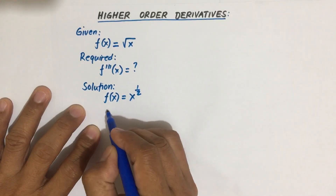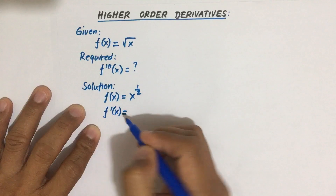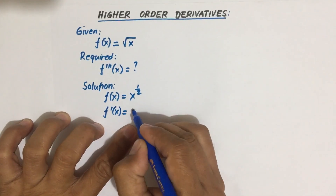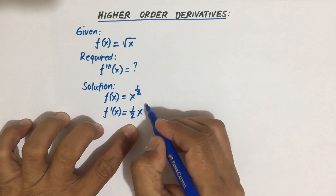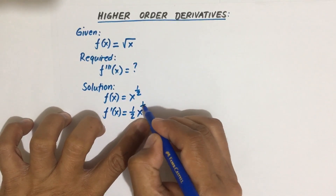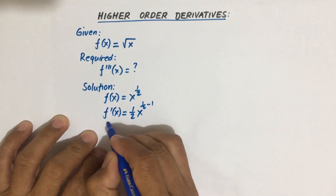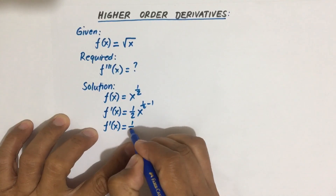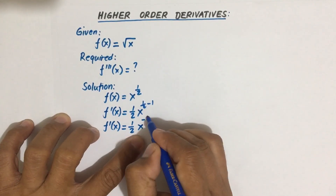The first derivative of f(x): using the power rule, we have one-half times x to the power one-half minus one. So f prime of x is equal to one-half x to the power negative one-half.